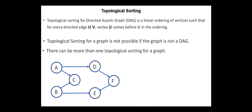There can be more than one topological sorting for a graph. For example, in the given graph, one topological ordering is A, B, D, F, E, C. Another topological ordering can be B, A, D, F, E, C.